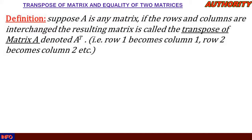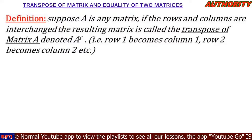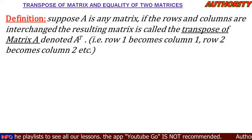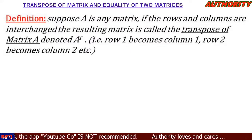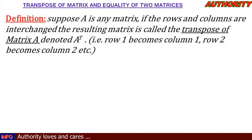What we are saying is that when you have a matrix and you interchange the rows and columns — the first row becomes the first column, the second row becomes the second column, the third row becomes the third column, the fourth row becomes the fourth column — the resulting matrix at the end of the interchanging is called the transpose of the matrix.